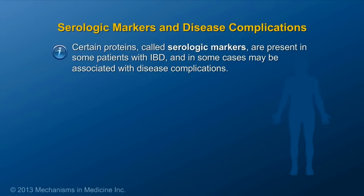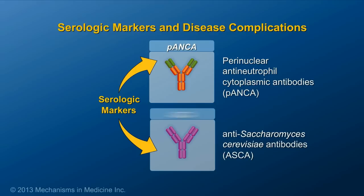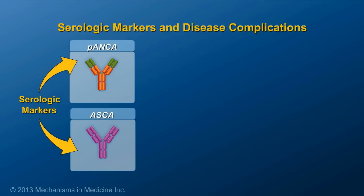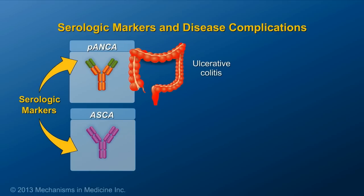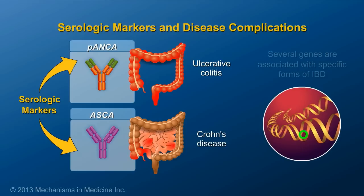Certain proteins, called serologic markers, are present in some patients with IBD, and in some cases may be associated with disease complications. Perinuclear antineutrophil cytoplasmic antibodies (pANCA) and anti-Saccharomyces cerevisiae antibodies (ASCA) are examples. pANCA have been found in patients with ulcerative colitis, and ASCA have been found in patients with Crohn's disease. In addition, several genes are associated with specific forms of IBD and may predict severity.